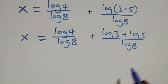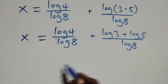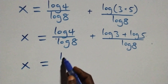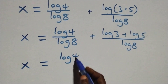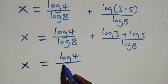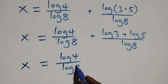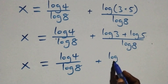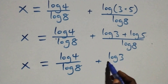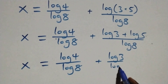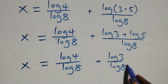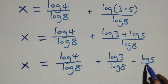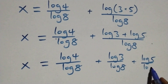Then from here, we separate this into two fractions. And we have x equals to log 4 over log 8 plus log 3 over log 8 plus log 5 over log 8.